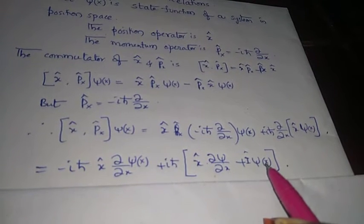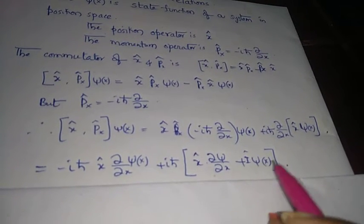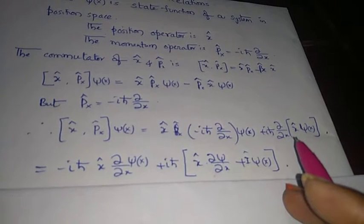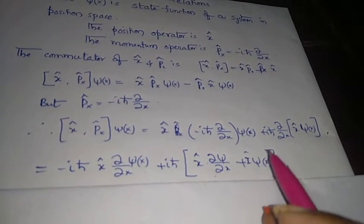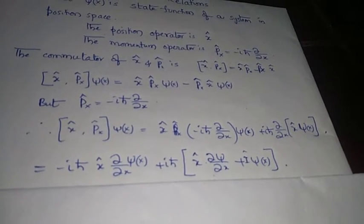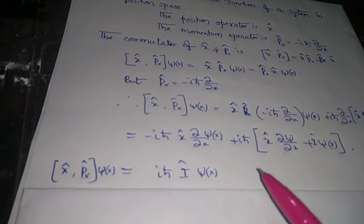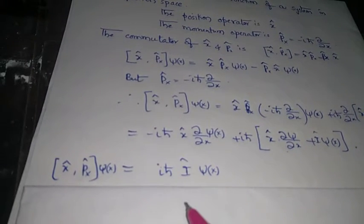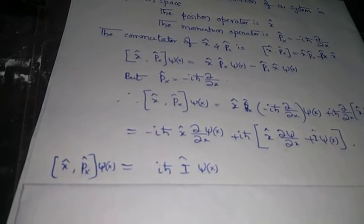When we keep ψ(x) constant and differentiate x hat with respect to x, we get the identity operator. These two terms, the first two terms, will cancel and we are left with iℏ times the identity operator times ψ(x).